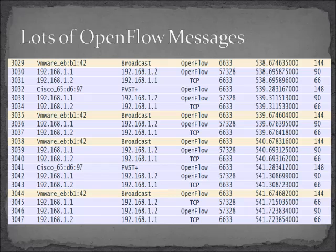There are lots and lots of OpenFlow messages being generated here. You can see that this is the switch and the controller just sitting here — I'm not doing anything in the topology, there's not a lot of host traffic going on, but I am connected to an external network. You can see there's Cisco traffic in here — the Cisco switch is generating spanning tree traffic. That is causing the OVS switch to communicate with the controller. The link between the switch and the controller can actually get quite busy, because if you're doing a reactive build, it is responding to everything that's happening on the network.